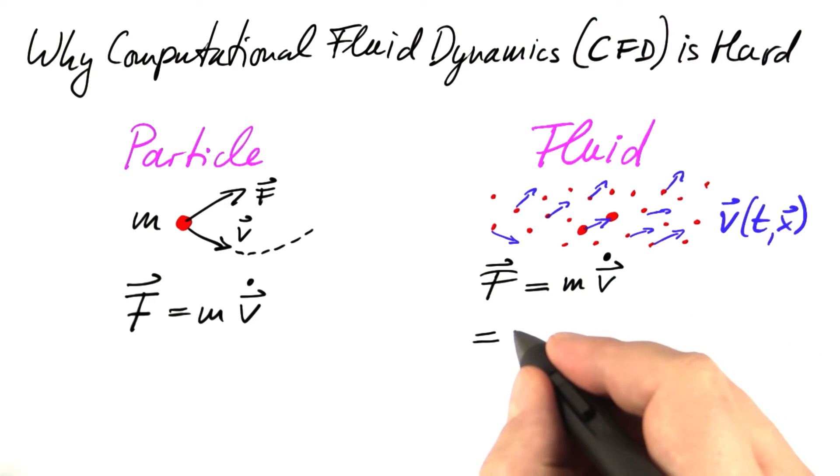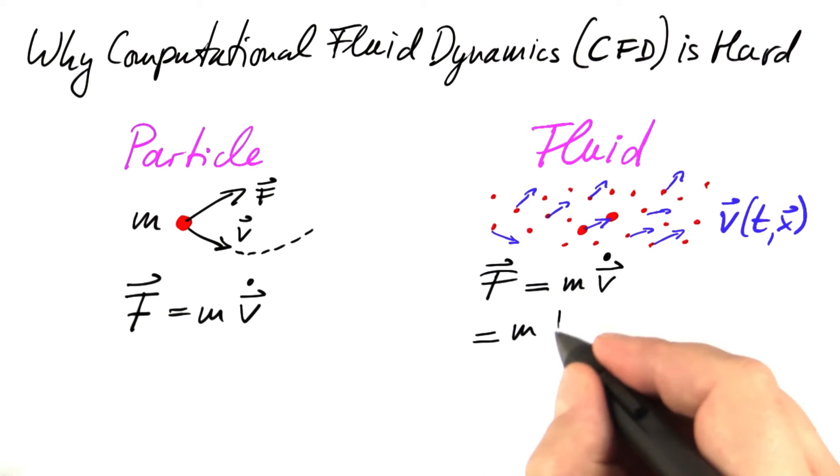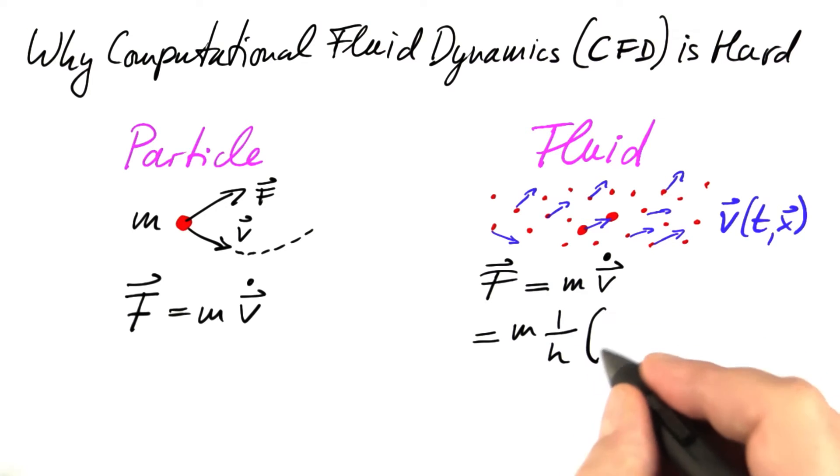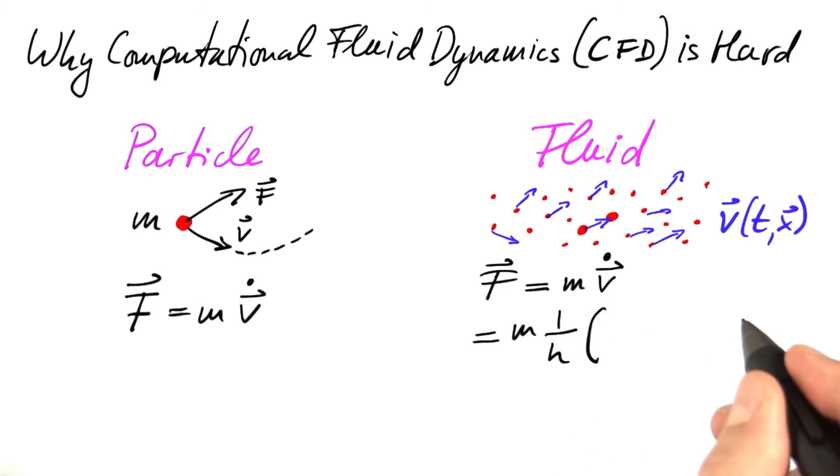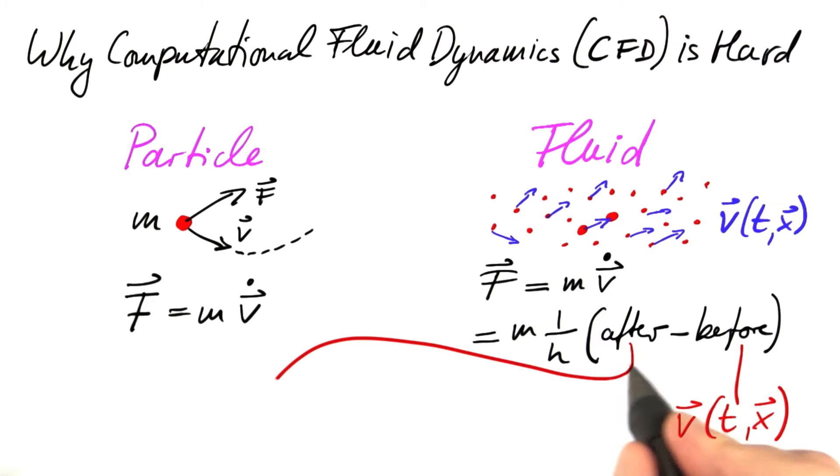Let's look at what happens after a very short time step. It's mass times one over that time step, and now we have to form the difference of the velocity after that time step minus the velocity before that time step. The before part is easy. That's simply our velocity field at the current time and the current location.